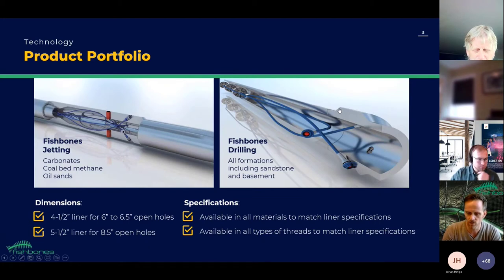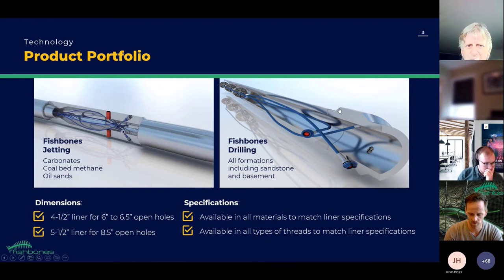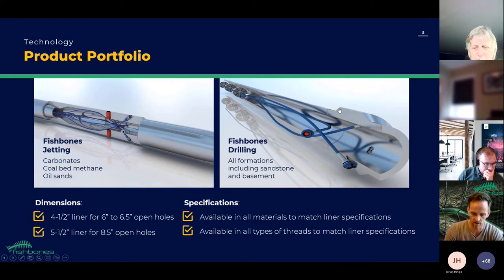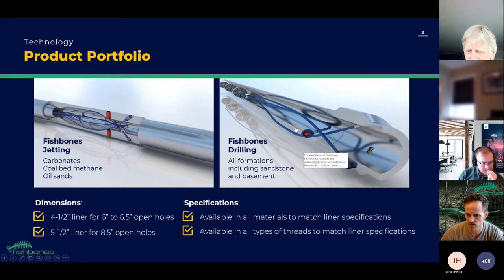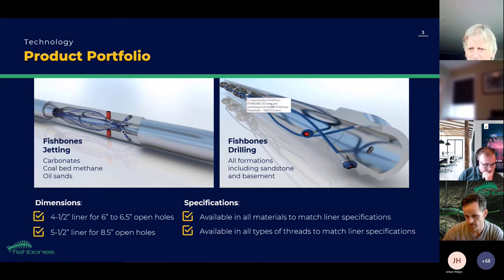We divide our technology into two main parts. First is Fishbones Jetting, developed first — the first job was in 2013 — but we saw limitations in harder formations; abrasives didn't make a complete hole. So we developed the Fishbones Drilling System, which has turbines — one turbine per needle drives a bit on the other end. The bit size is 12 millimeters, making a 13-millimeter hole. You pump it inside the liner and activate the needles, which drill out in a couple of hours.